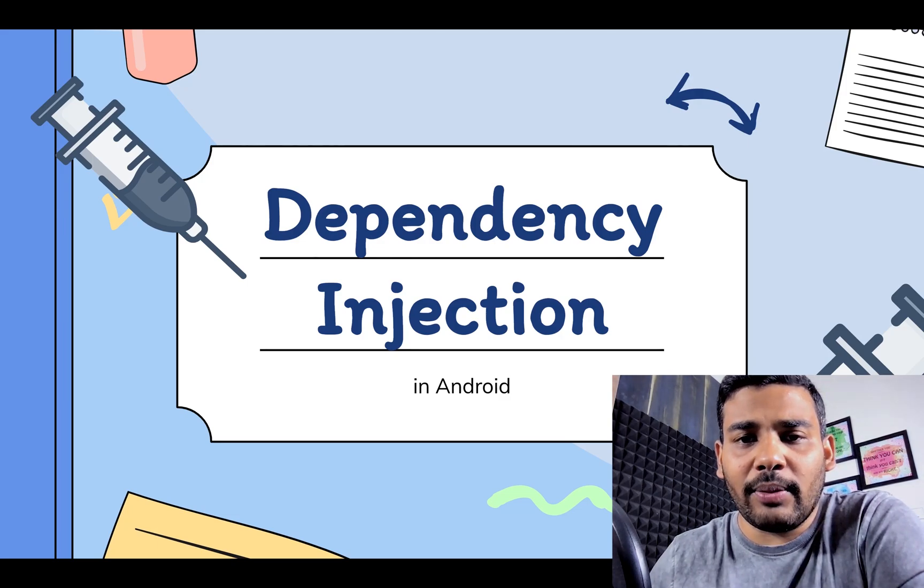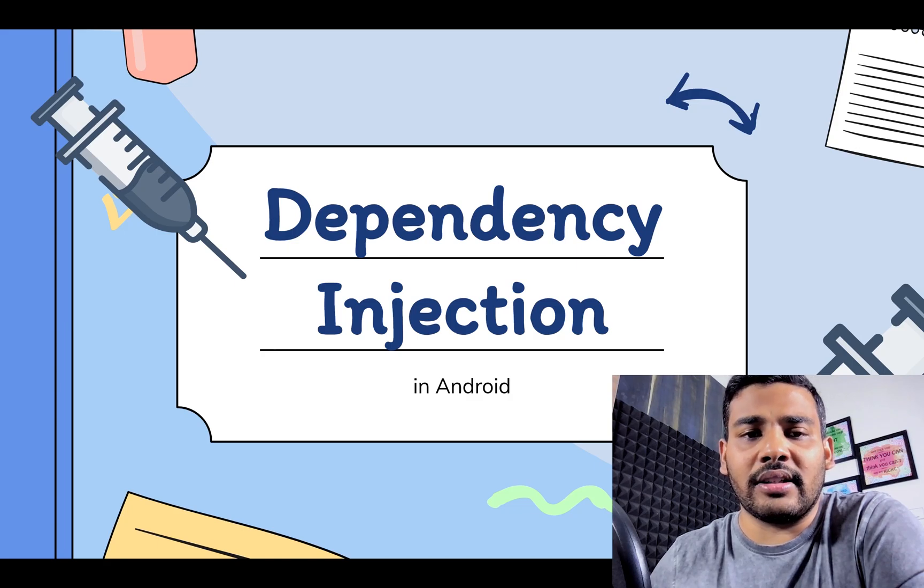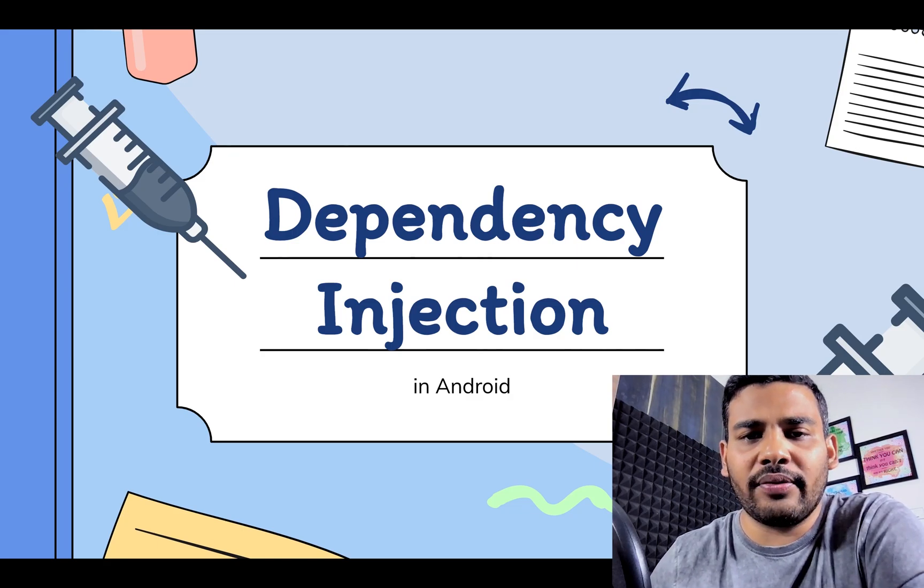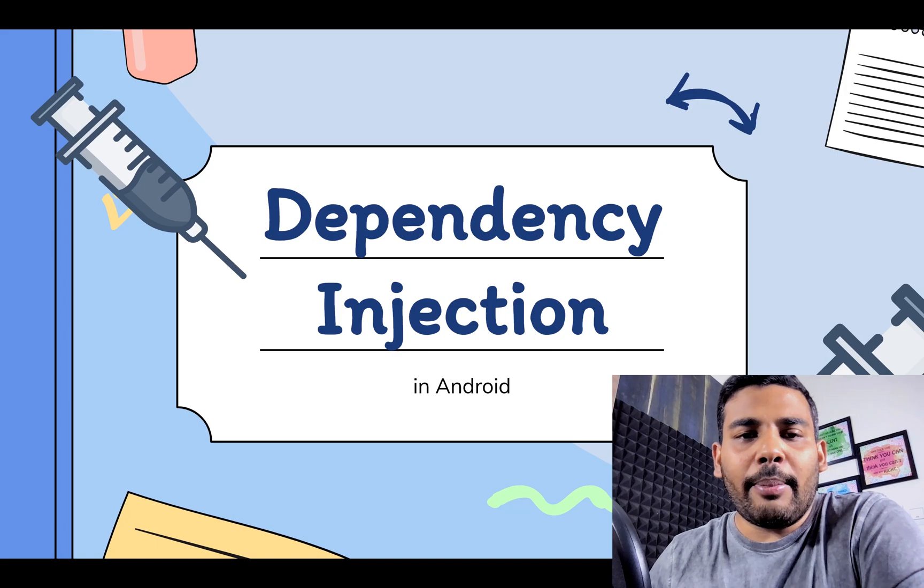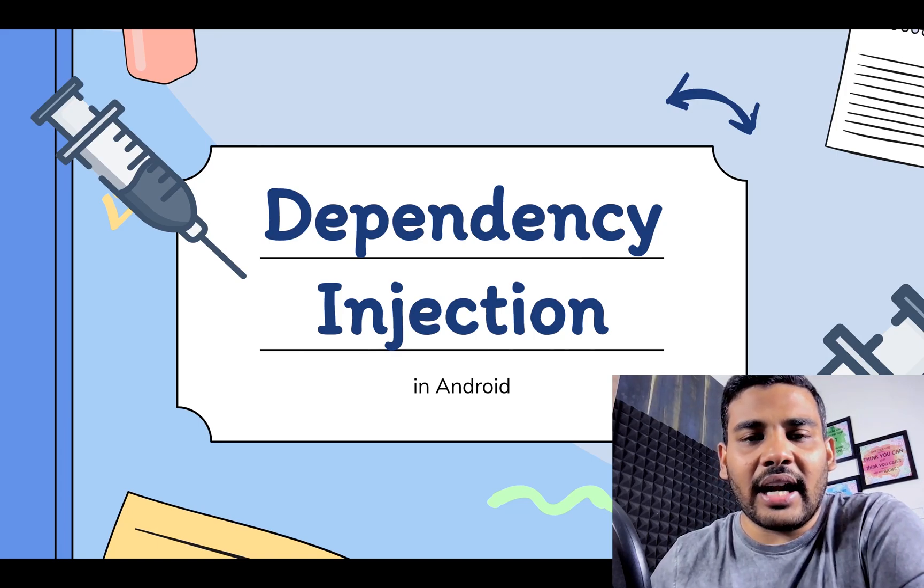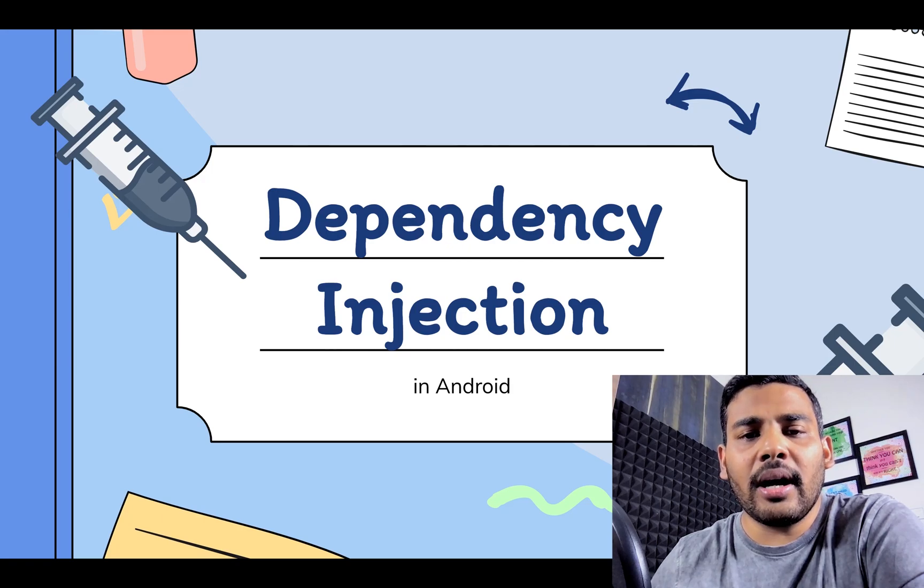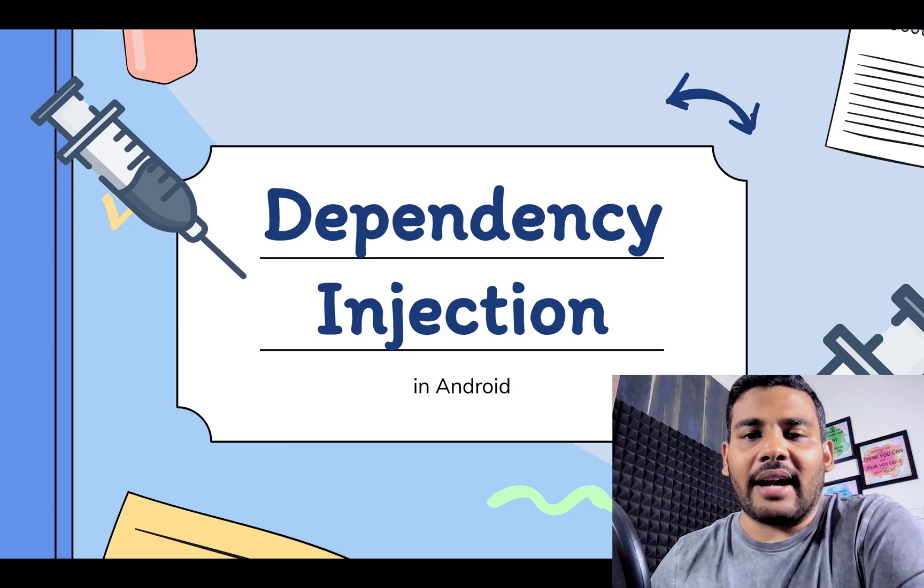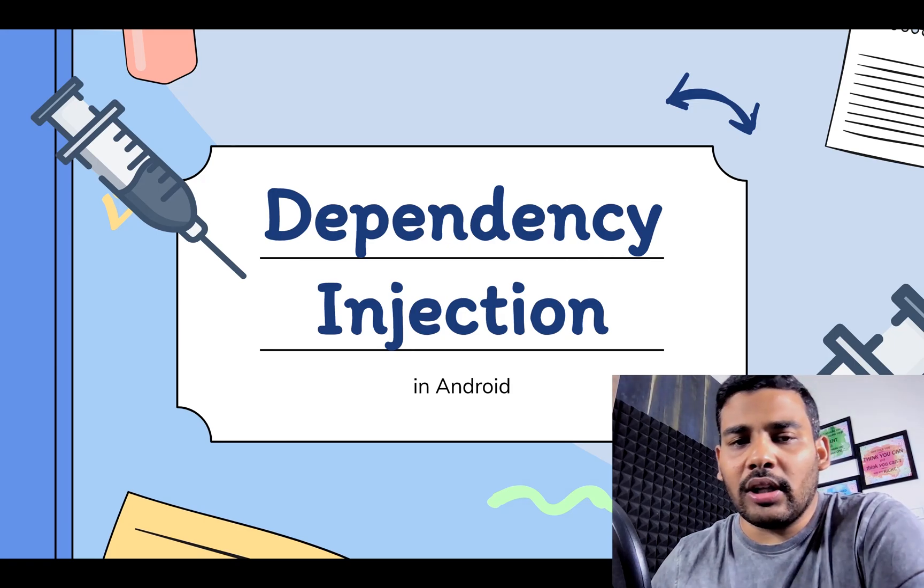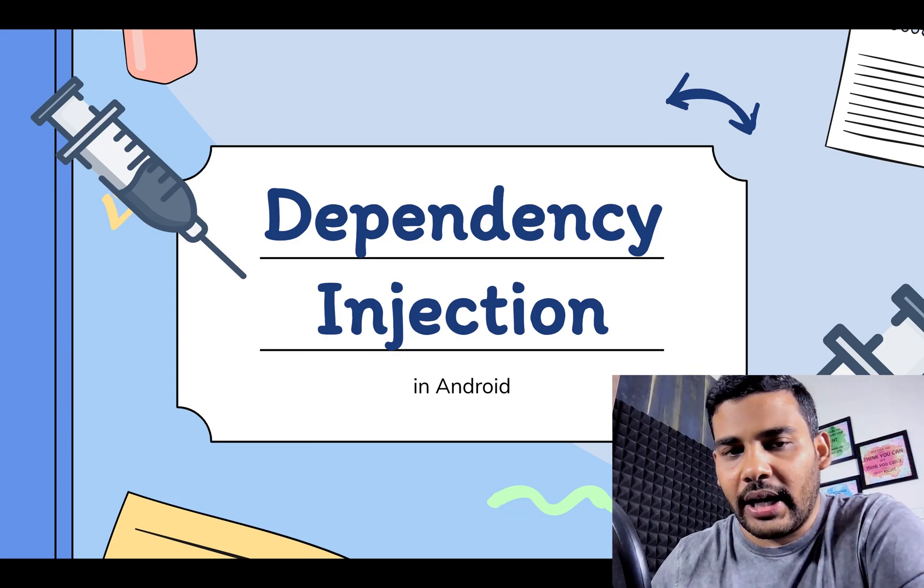Dependency injection is one of the most important design patterns that you must understand as a software engineer. Dependency injection is a technique that is widely used in software engineering to eliminate coupling of code, and that is why the concept is also used while building Android apps.